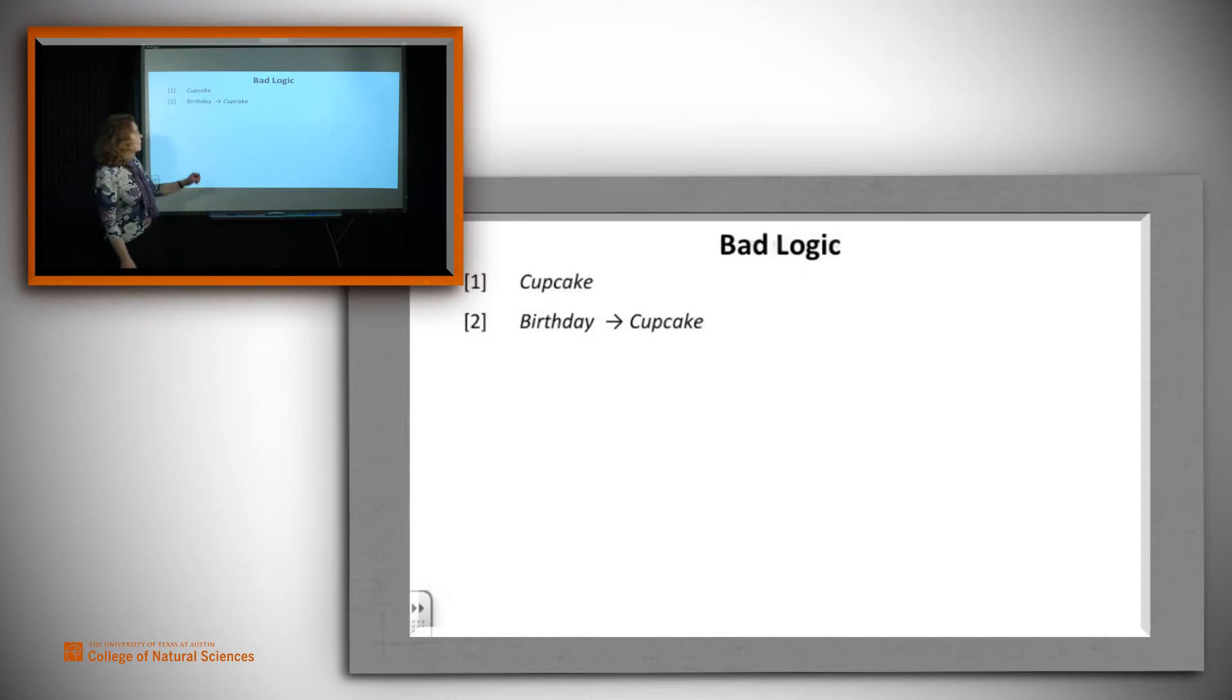What happened? Well, we're told cupcake, and we're told that birthday implies cupcake. It appears that what they did was to use a rule called converse. The converse says, well, if you have birthday implies cupcake, you must also have cupcake implies birthday.